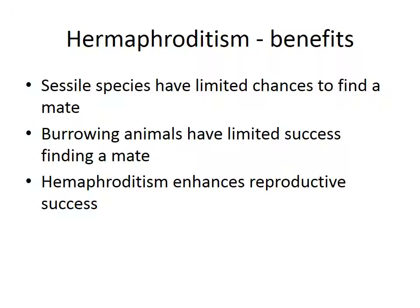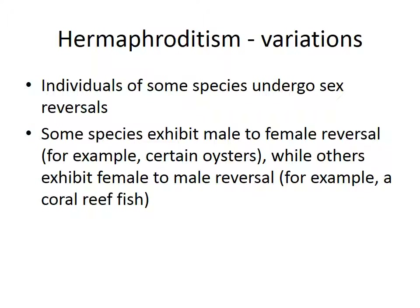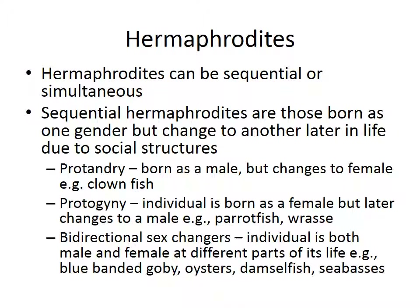Let's look at the variations of hermaphroditism. Some species undergo sex reversals — this is very energy-intensive and can't be done many times in one life cycle. They will be born one gender and then at some point reverse. Some species exhibit male-to-female reversal, like oysters; others exhibit female-to-male reversal, like certain coral reef fish. They don't do it too many times in one life cycle.